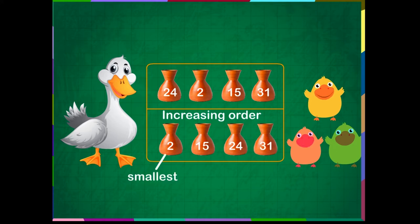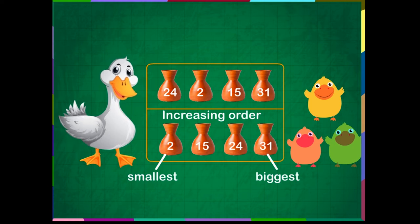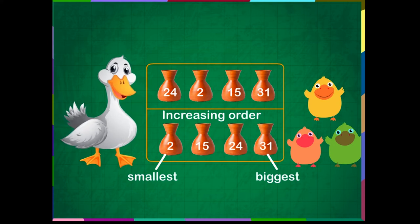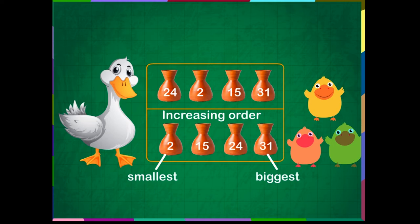Here, the number 2 is the smallest, and the number 31 is the biggest. Correct! So, remember, increasing order means arranging anything from smallest to largest.